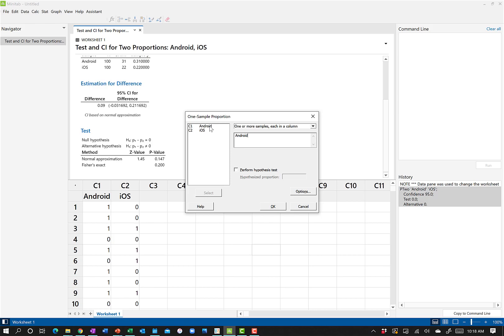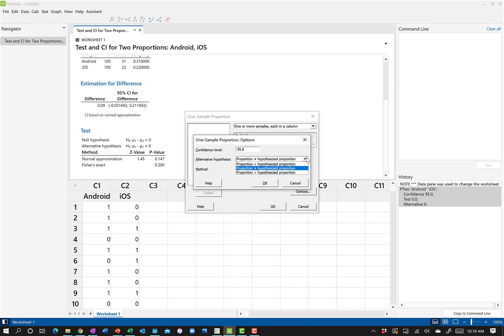In this case, our data is in column one. We are going to perform a hypothesis test with the hypothesized proportion being 0.25. And now we are going to do a one-tailed test.